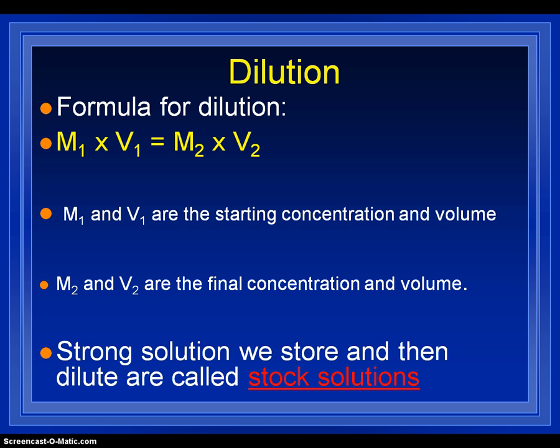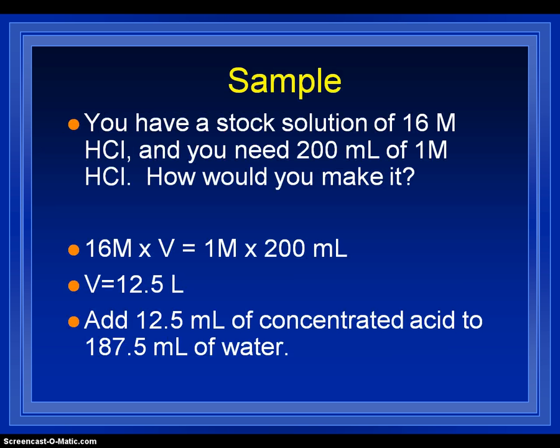So, we're going to do this with very strong solutions, also called stock solutions. So, let's do an example. So, it says you have a stock solution of 16 molar hydrochloric acid, and you need 200 milliliters of 1 molar hydrochloric acid. How would you make it?